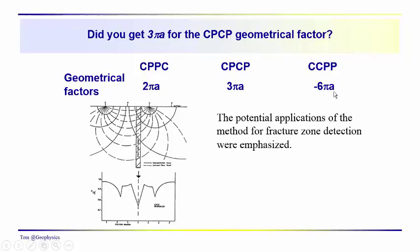We also noted in a supplementary discussion that this minus sign here shows up in the dipole-dipole array. Basically a CCPP is a dipole-dipole configuration. But if you tackled this problem, you found that CPCP geometrical factor was three by A.